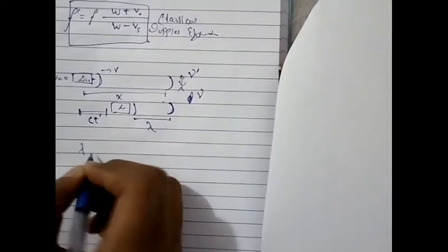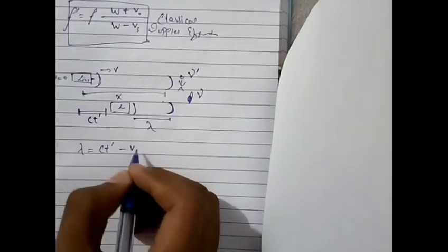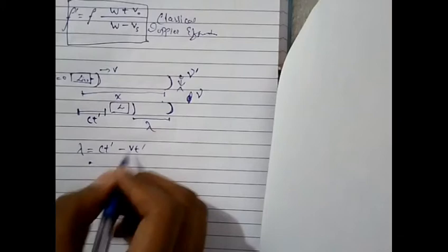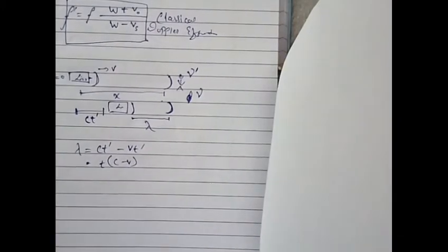If you have to find out this lambda, lambda will be equal to C D prime minus V D prime.